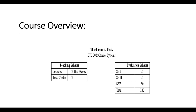The name is Control System. This course will be having 3 hours per week and the total credits will become 3. There will not be any lab for this subject. SE1 and SE2 will be having 25 marks each and SEE will be having total 50 marks, so this subject carries total 100 marks.